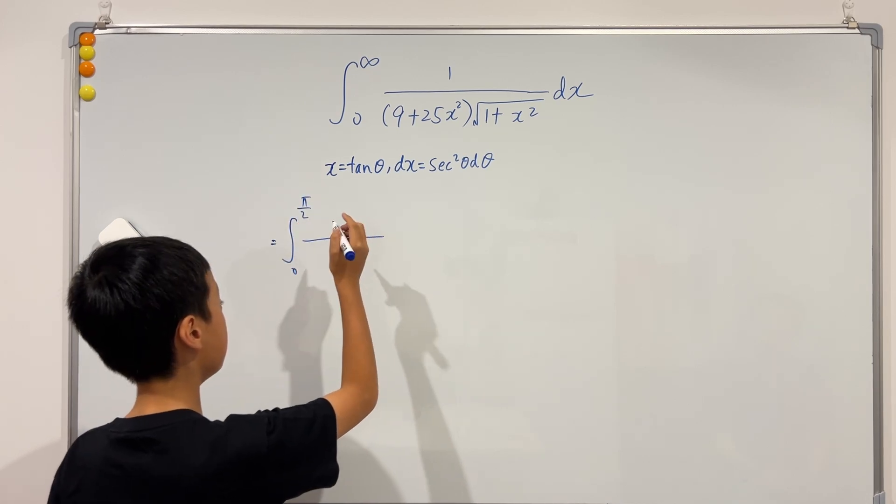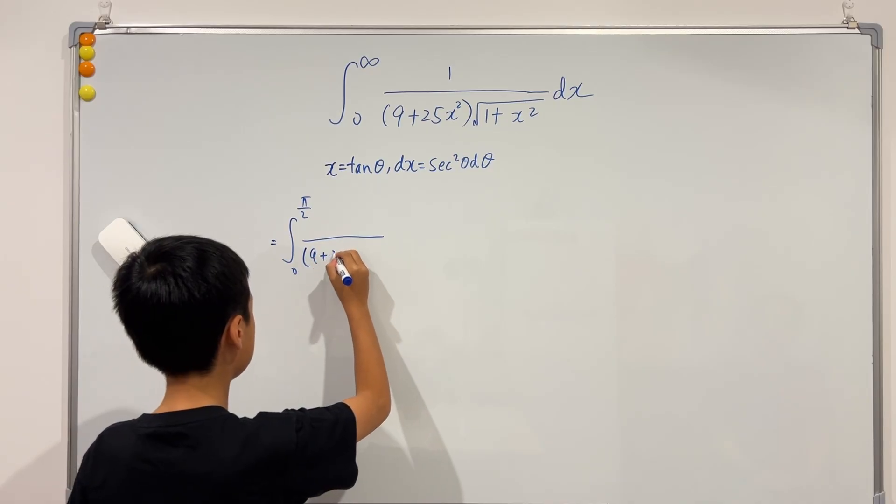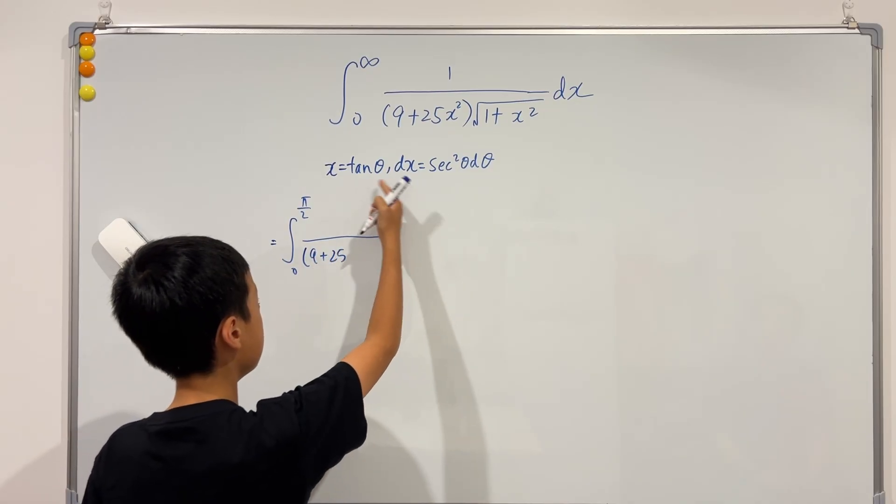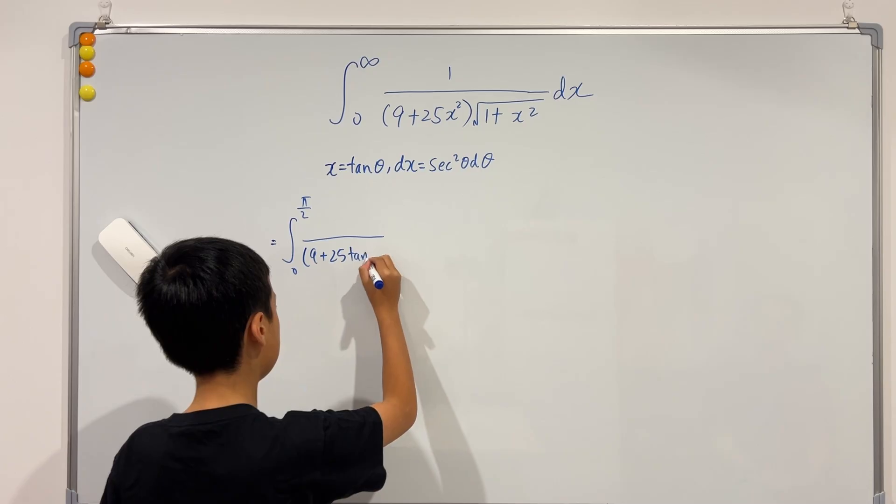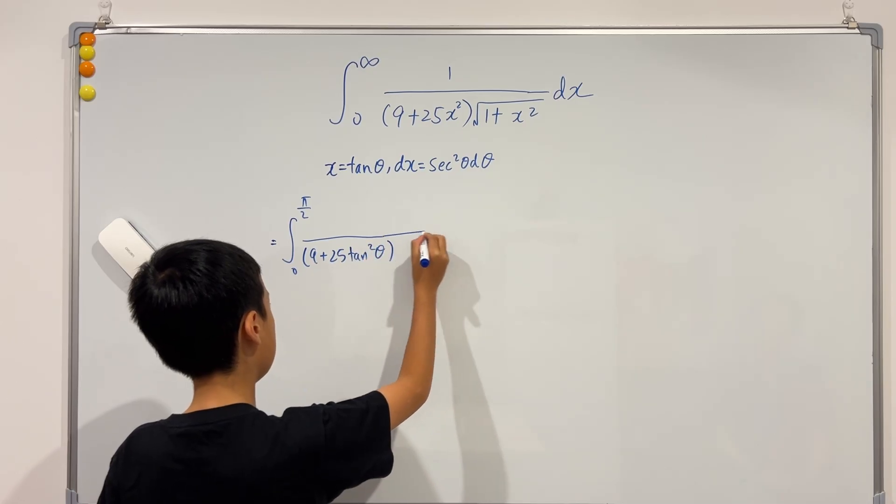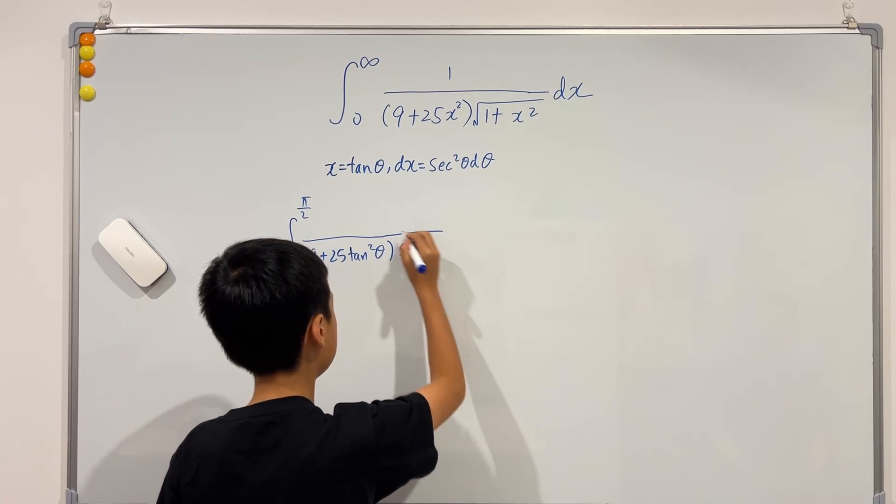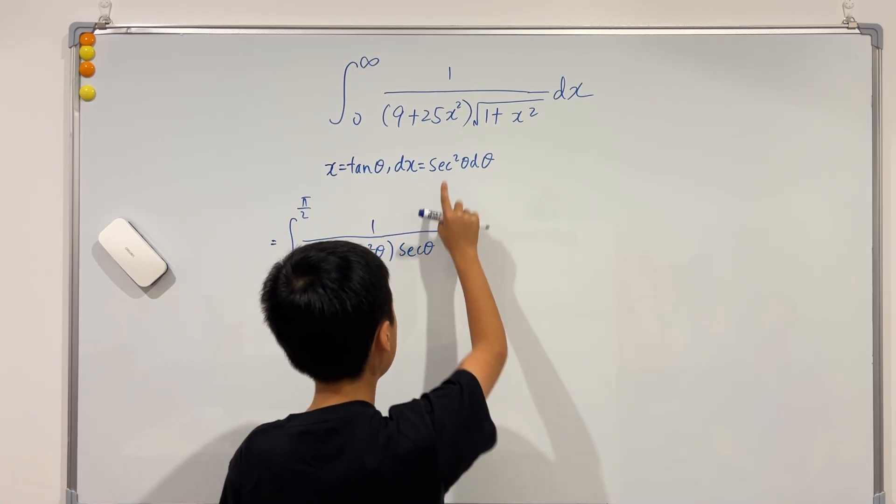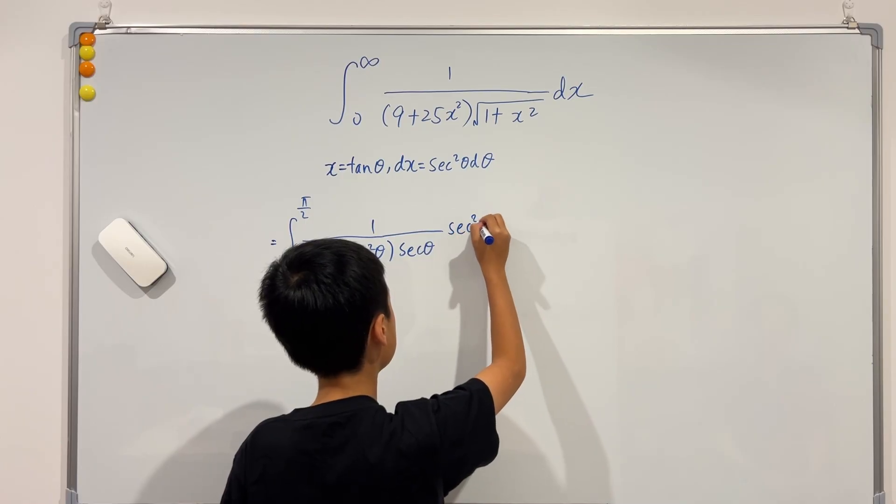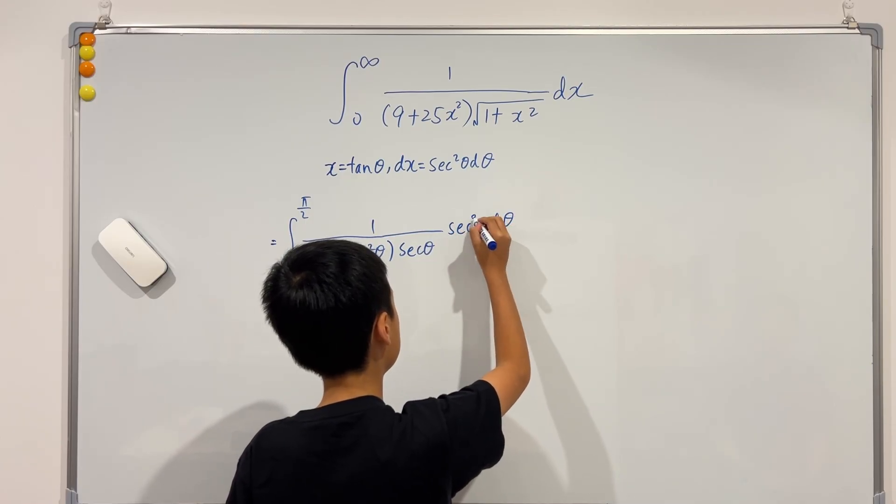The bottom would just be 9 plus 25 x squared is just tangent squared of theta. Multiply by, like I said, that would just be sec of theta. And then dx is just sec squared theta d theta.